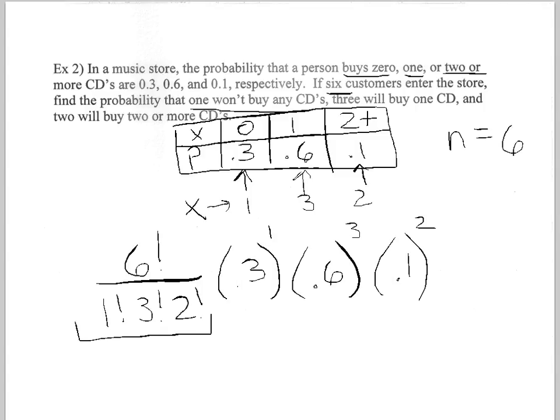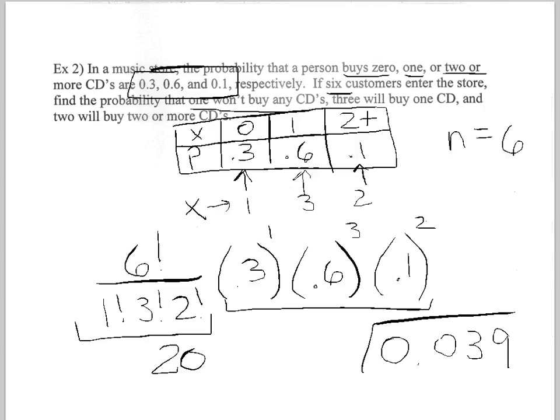Again, I put this part in my calculator, you get 20, multiply by the remaining part. If you pause the video for a second, figure all this out. The answer in this case would be 0.039. So what we're saying is if these probabilities are accurate, the likelihood, the probability that six customers will break into one for zero CDs, three for one CD, and two for two or more CDs is 0.039.